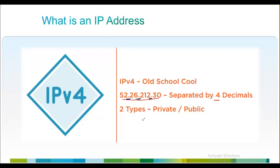IPv4 is a 32-bit value represented as four octets — decimal numbers separated by dots. We also learned that the 32-bit address space is very small for the entire world, so IPv4 addresses are divided into two types: private and public. Private IP addresses can be repeated with no conflicts, which saves a lot of public addresses — this is how we manage to allocate the 32-bit address space for the entire world.